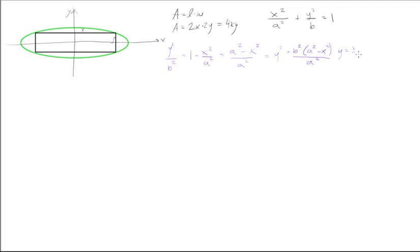And finally we get y = ±√(b²(a² − x²)/a²). Since we're not going to get a negative area — that doesn't make any sense — we cross out the negative, so y is just the positive square root.